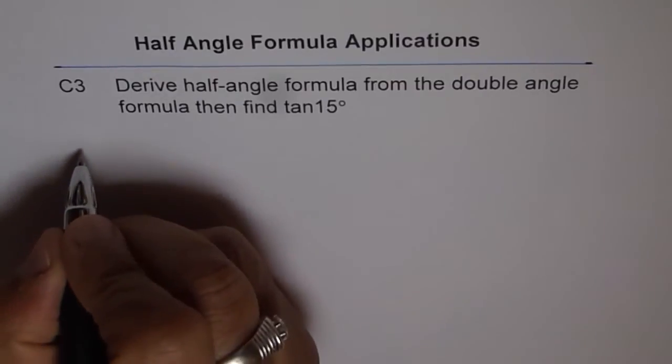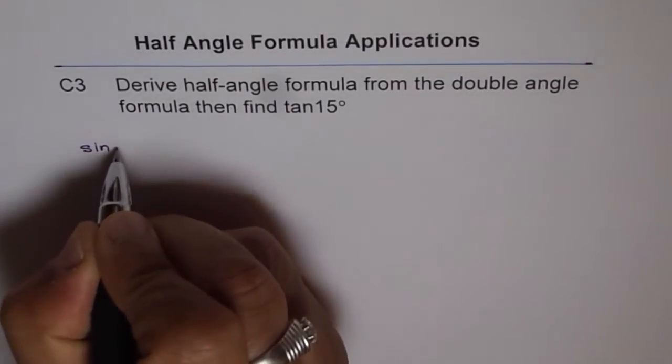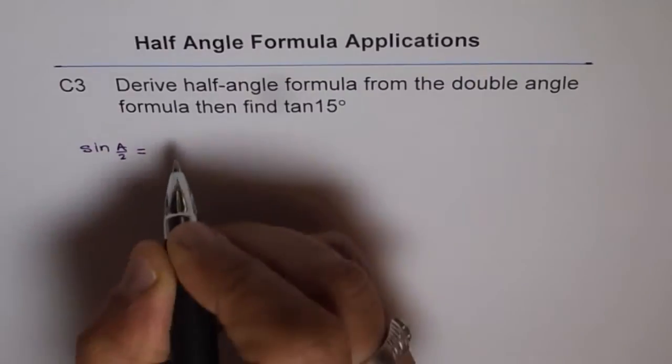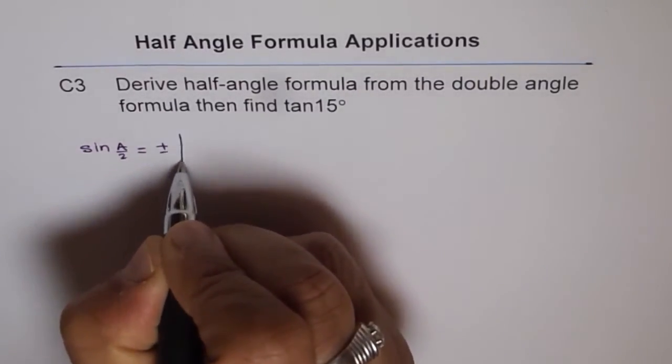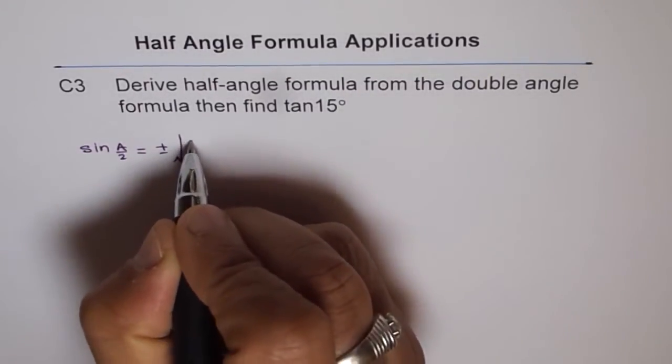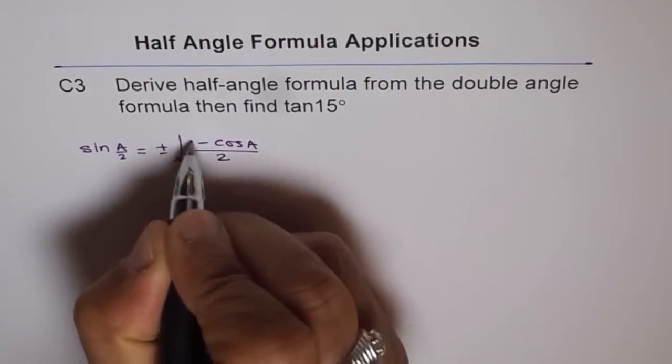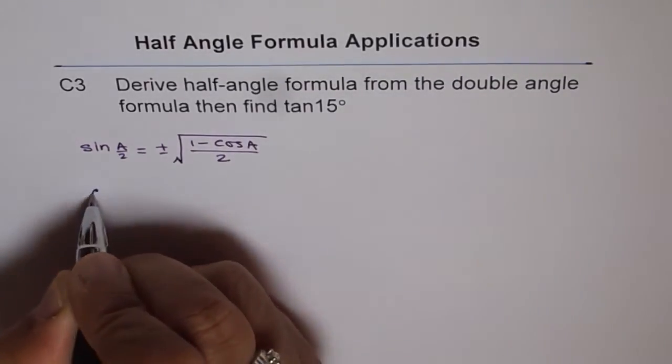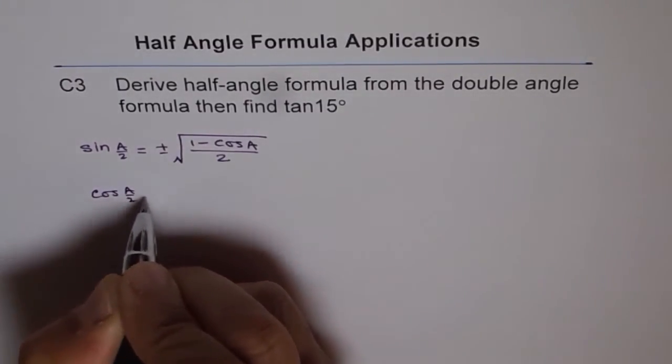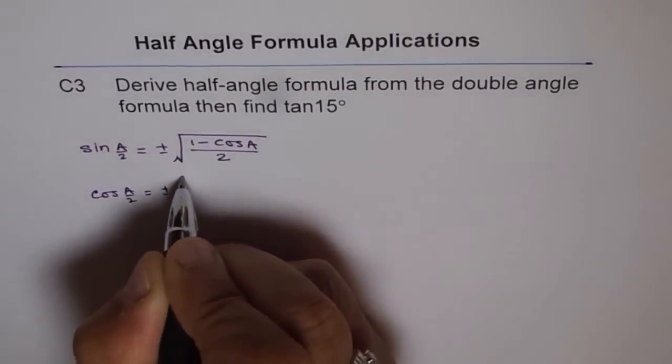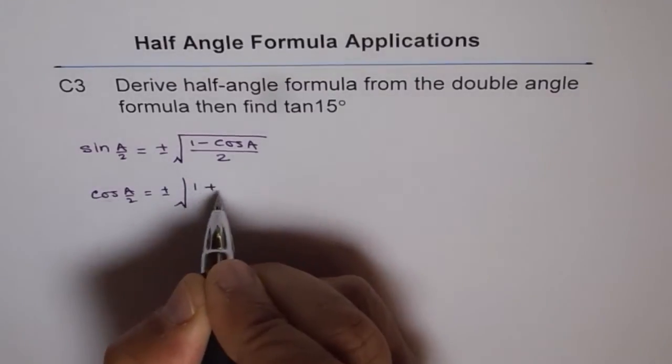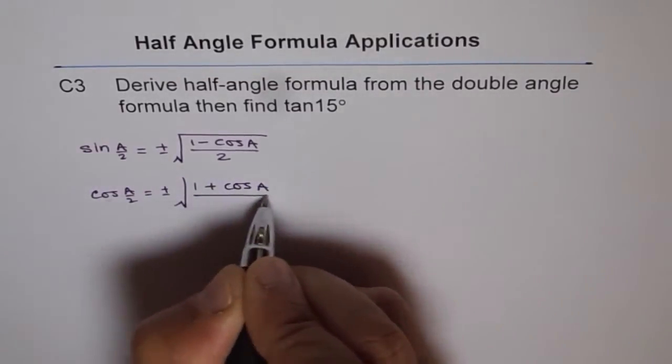For sine a by 2, half-angle, we got sine a by 2 is plus minus square root of 1 minus cos a over 2.